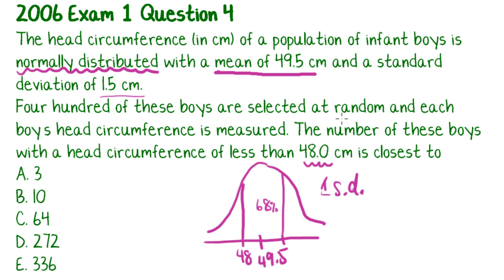Okay. So now what do we do? 400 of these boys are selected and we want to know the number of these boys with a head circumference of less than 48. So we're talking about this percentage in here, less than 48. That's what I'm trying to find, that coloured in section. Okay. So what percentage is that first of all? We do want to know the number of boys, but let's figure out the percentage first. If this is 68 in here, the two tails combined must be 32, which means in each tail there's 16%.